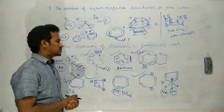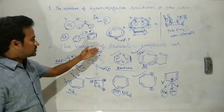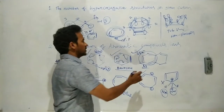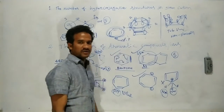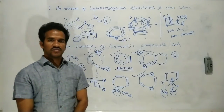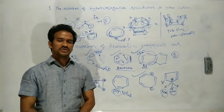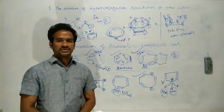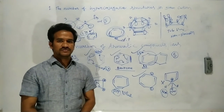So the total number of aromatic compounds or ions from the given structures is 5. Thank you for watching. Please subscribe to my channel. I aim to upload daily videos which are very useful for JEE Main as well as JEE Advanced.